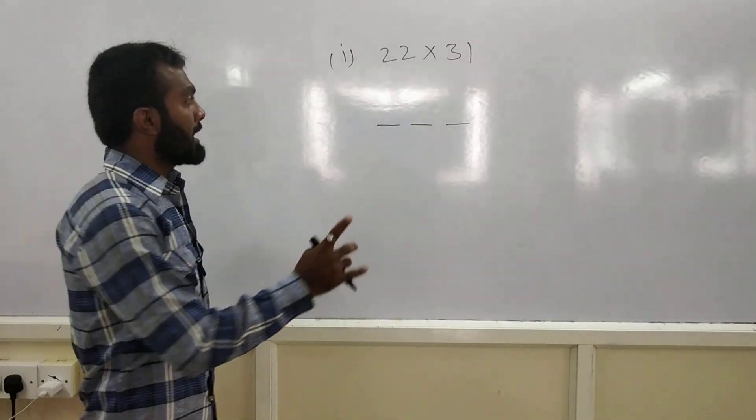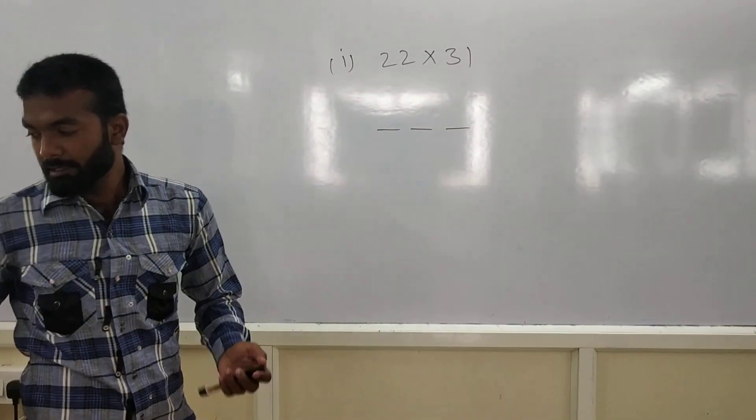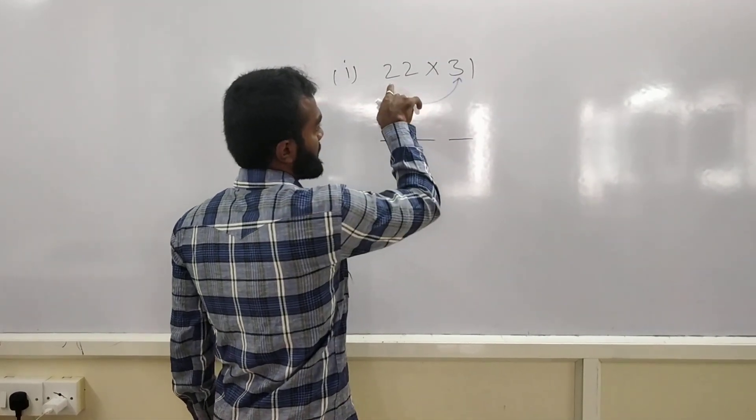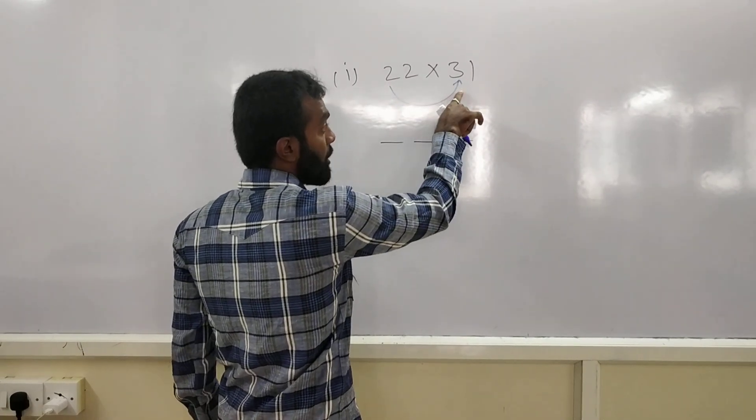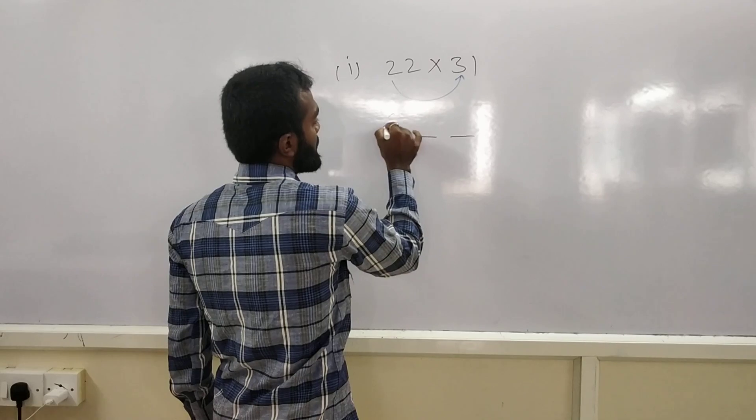And, multiply the 1st digit with 1st digit. 1st digit of 1st number with 1st digit of 2nd number. Multiply 1st digit of 1st number with 1st digit of 2nd number. And write the result. 2, 3 is 6. Just put the result over here.